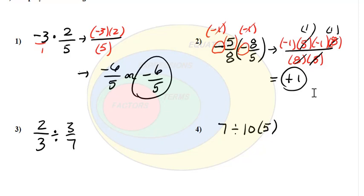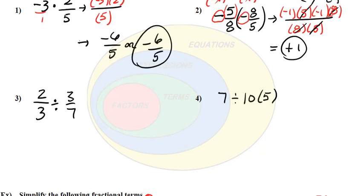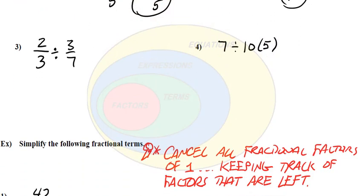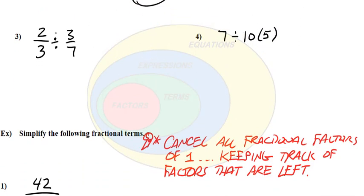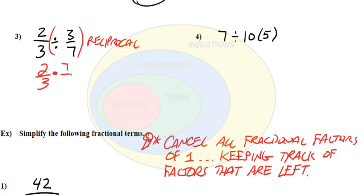Now if we have division in a problem, the division signifies a factor, so we want to take the reciprocal. We have 2 thirds and multiply times the reciprocal. In this case there's nothing to cancel — the 3s, the 2, and the 7 don't share factors. So we're left with multiplying: 14 on top and 9 on the bottom.